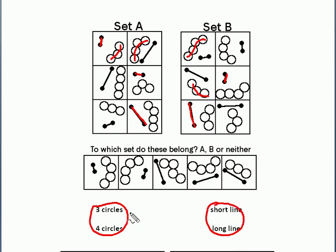then there are actually four different ways that we can pair these up. We can pair up three circles with short line, we can pair up four circles with long line, we can pair up three circles with long line, and four circles with short line.